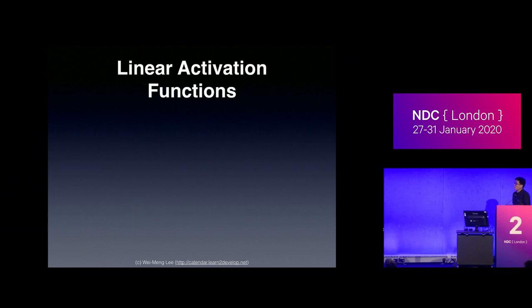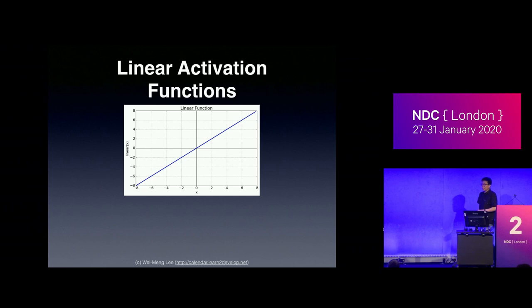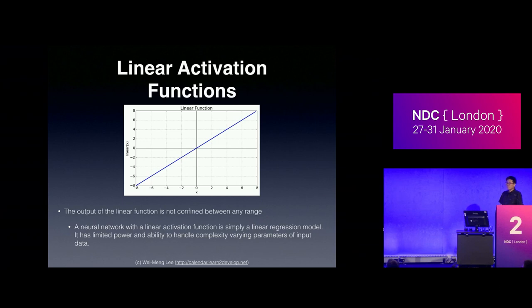Besides the binary step function, you have the linear activation function. In deep learning, we generally do not use linear activation functions, because if you do, your neural network is basically just a linear regression model — it doesn't add anything meaningful. So in deep learning, we usually avoid linear activation.